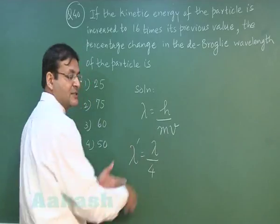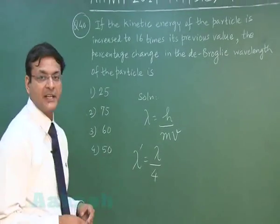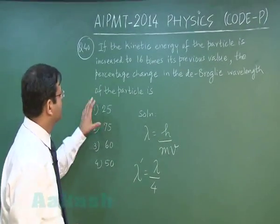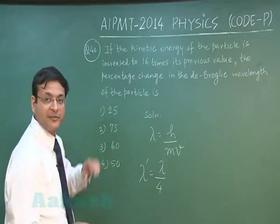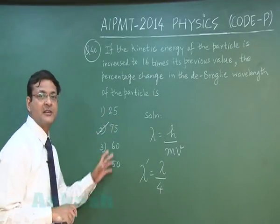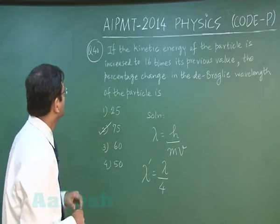The new lambda is lambda/4, meaning only 25 percent is retained. Therefore, the percentage change (decrease) is 75 percent, and the most appropriate answer is option number 2.